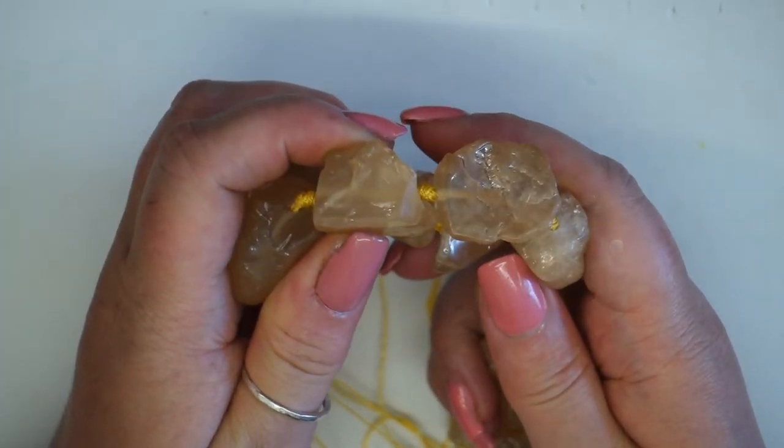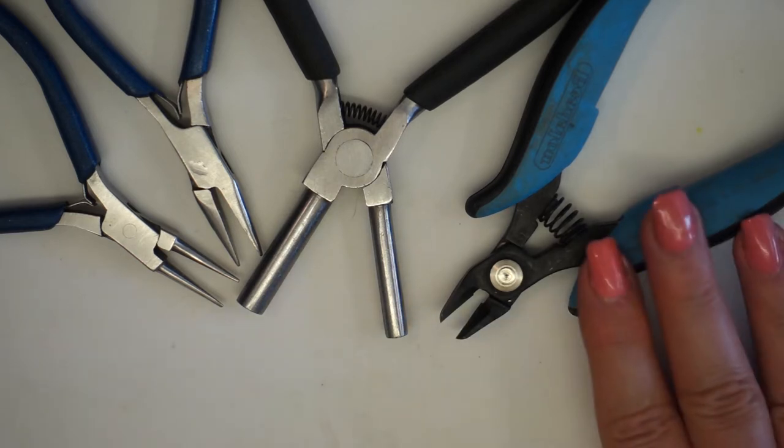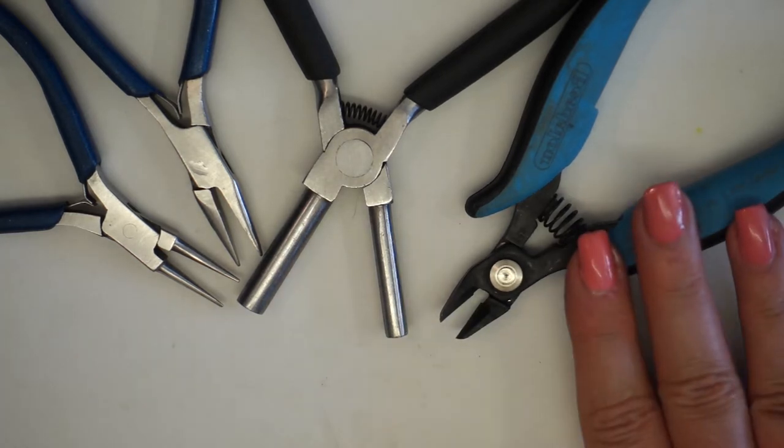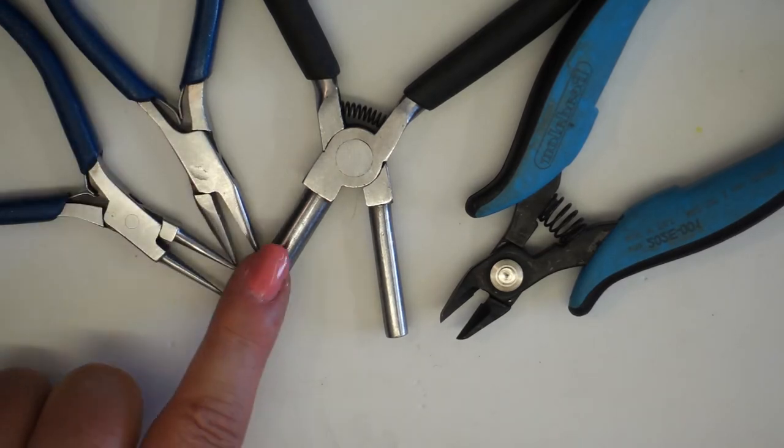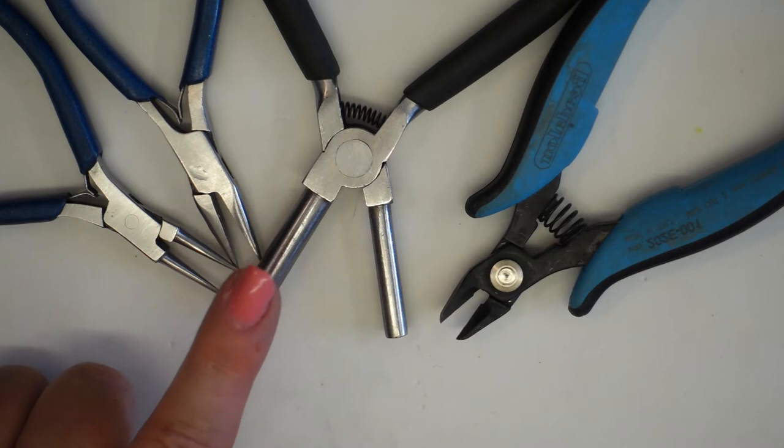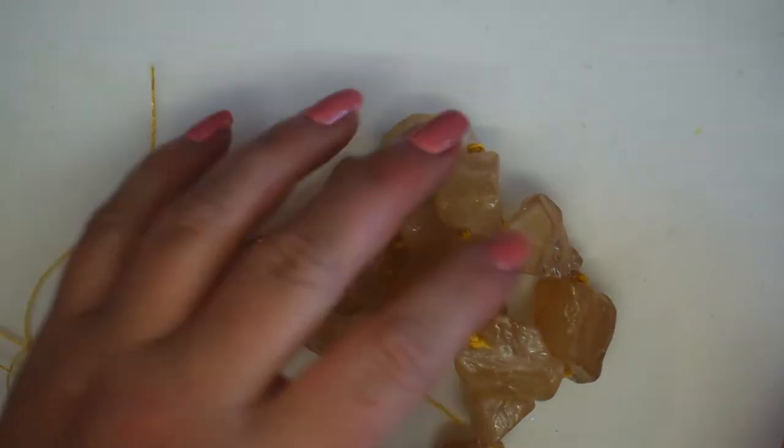So the tools that you need for this project are very simple. You need your flush cutters or your wire cutters, your round nose pliers, your chain nose pliers. These are optional but I find them quite essential, and these are my bail making pliers.